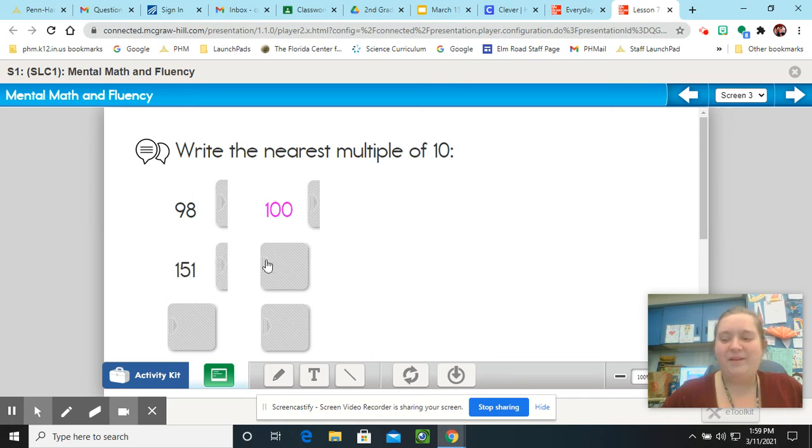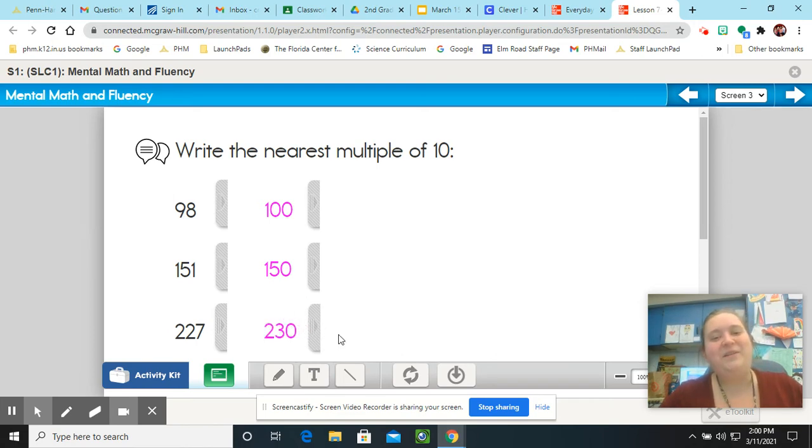Two more. 151. Let's take the 100 out of that and just focus on the 51. Would 51 be closest to 50 or 60? If you said this number is closest to 150, you are correct. And let's look at one last one, probably the hardest one on our examples. 227. If you don't think about the 200, but just think about the 27, that can help you. So, let's think about the 27. We don't want to forget about the 200, but let's think about the 27. Is it closest to 20 or 30? If you said 230, you are correct.